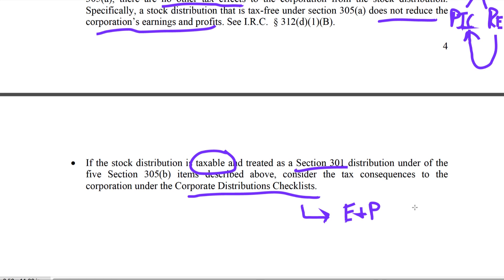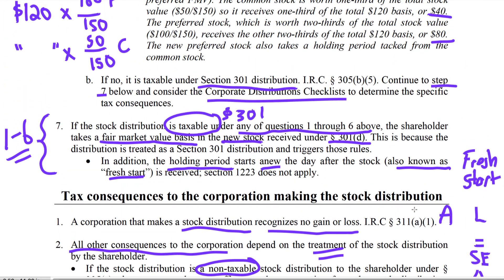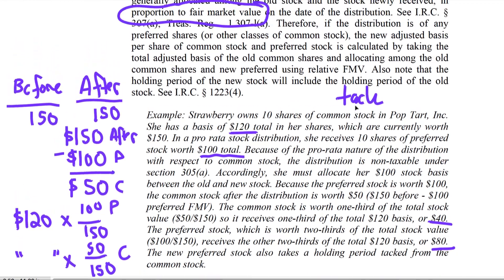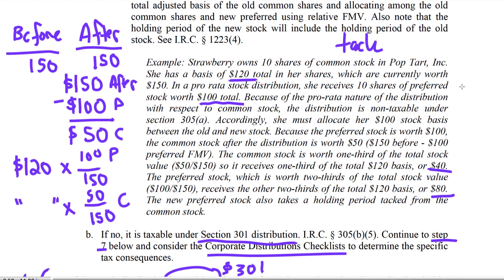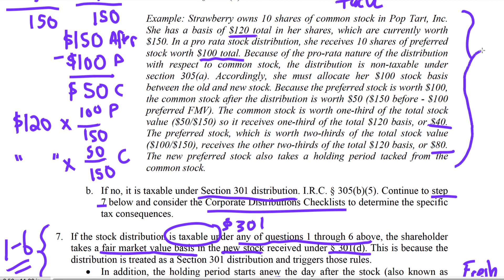We've gone through the stock distributions checklist analysis. One thing to keep in mind — in the Pop Tart example with Strawberry receiving preferred stock — there are potential issues for the shareholder later on. Taxpayers were abusing this situation to obtain lower tax rates, and Congress closed that door by enacting Section 306, which we'll cover in a later video. Don't skip that video — it's important.